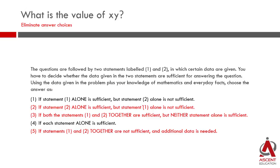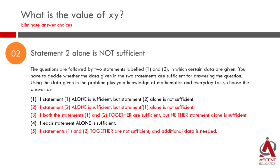Once we established that Statement 1 was sufficient, our answer choices were narrowed down to 1 or 4. Since Statement 2 is not sufficient, we can eliminate choice 4. So our answer is basically choice 1.